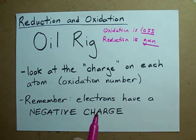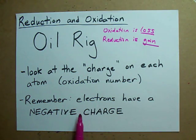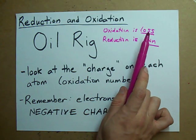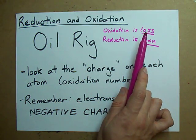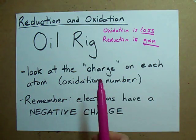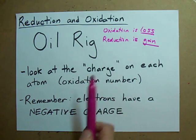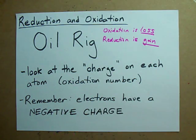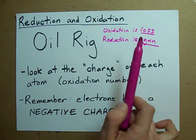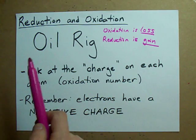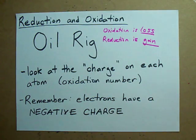Now remember, electrons have a negative charge. So if something is losing electrons, the charge is becoming positive — you're subtracting a negative. If you're gaining negative charges, your charge is going to get more and more negative.